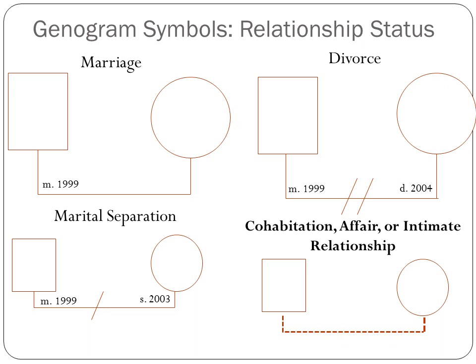Let's talk about how we denote relationship status on the genogram. Whenever we have a relationship, we put the male figure to the left and the female figure to the right. For a married couple, we have a solid line extending down from the middle of the male's shape, forming an L, moving over to the female's shape, and then going straight up. In the left-hand corner inside that relationship line, we put the year that those individuals got married — for example, M. 1999.